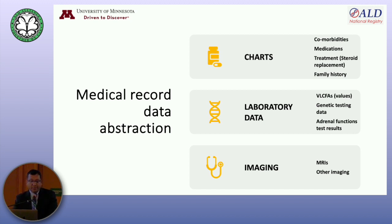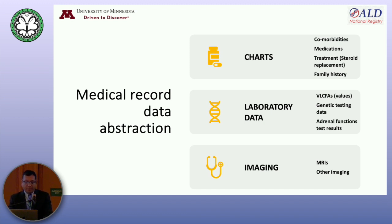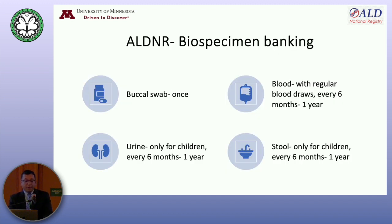This is where we look at the lab data, the biochemical testing, genetic testing, as well as adrenal function testing. We also have an imaging biorepository where we get the MRIs. Also attached with this registry is biospecimen banking. We do four biospecimens: a buccal swab at the time of entry into the registry, and we try our best to get blood, urine, and stool every six months for children in the high-risk age group. For adults, we have limited this to just blood every year.